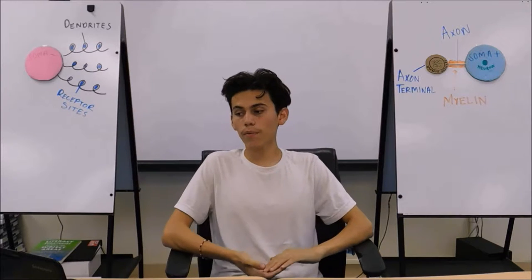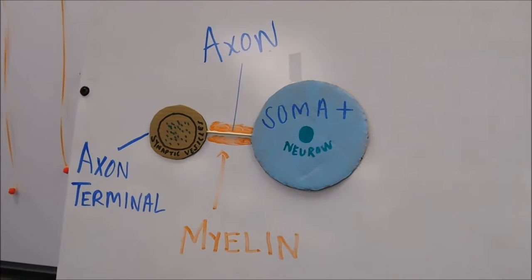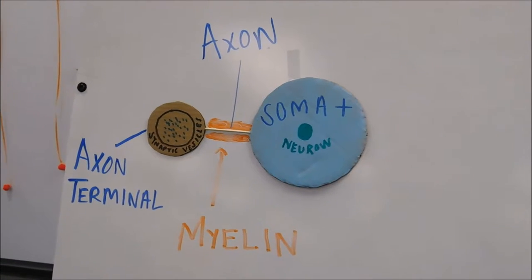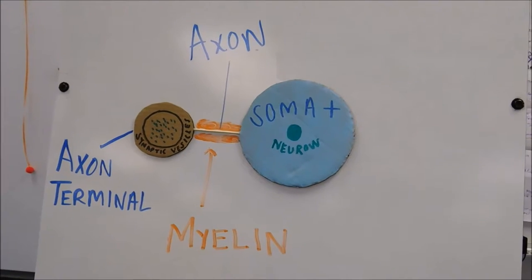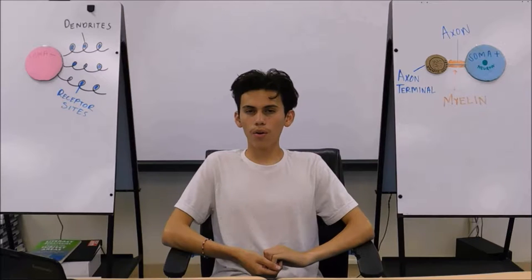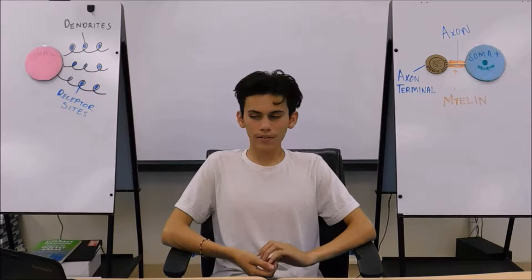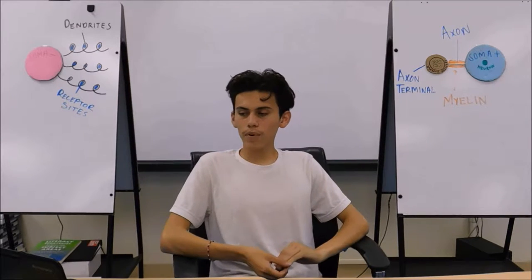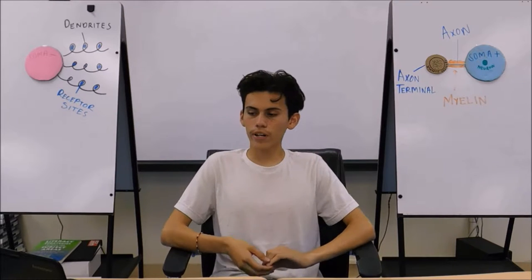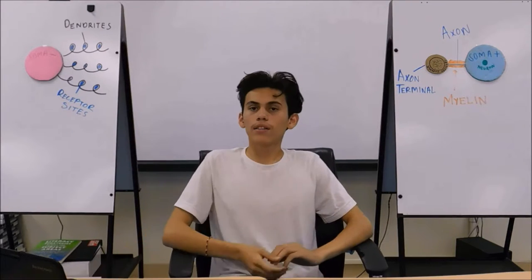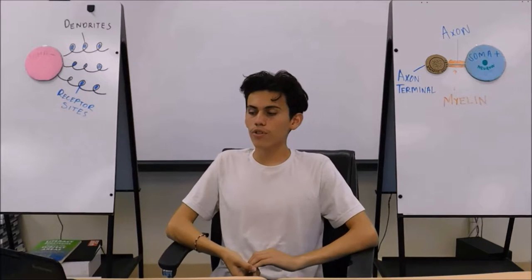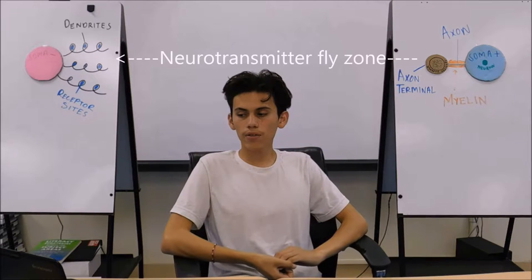At the very end of the axon, we have an axon terminal, and inside the axon terminal, we have synaptic vesicles. This is where the neurotransmitter lives. The axon terminal is responsible for releasing the neurotransmitters inside the synaptic vesicles, which are responsible for transmitting signals across the synapse from one soma to the other.